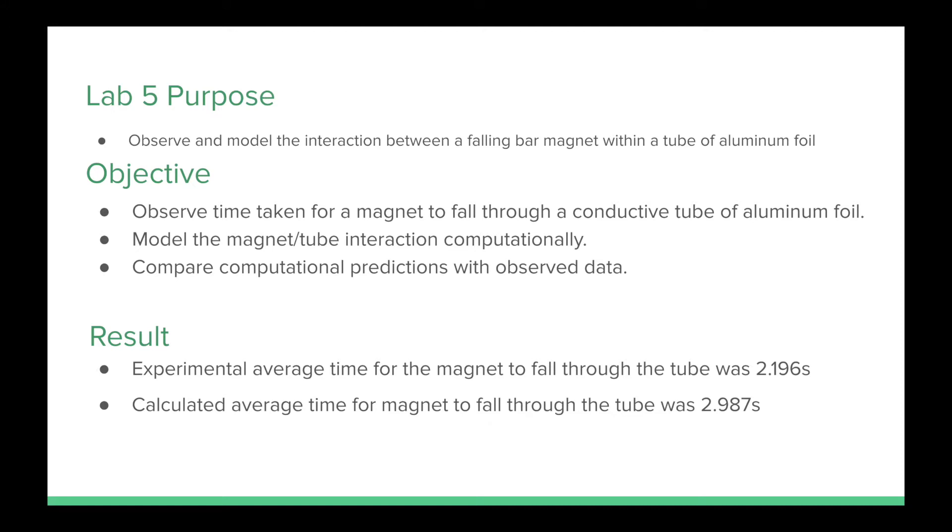The resulting average experimental time taken for the magnet to fall through the aluminum foil was 2.196 seconds, while the calculated time came out to be 2.987 seconds.